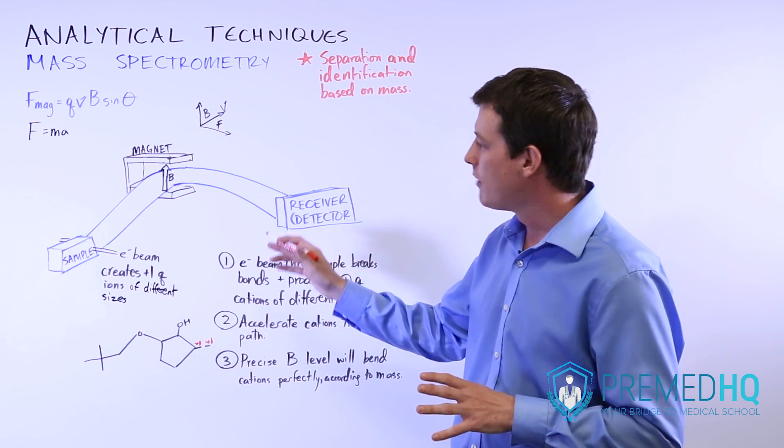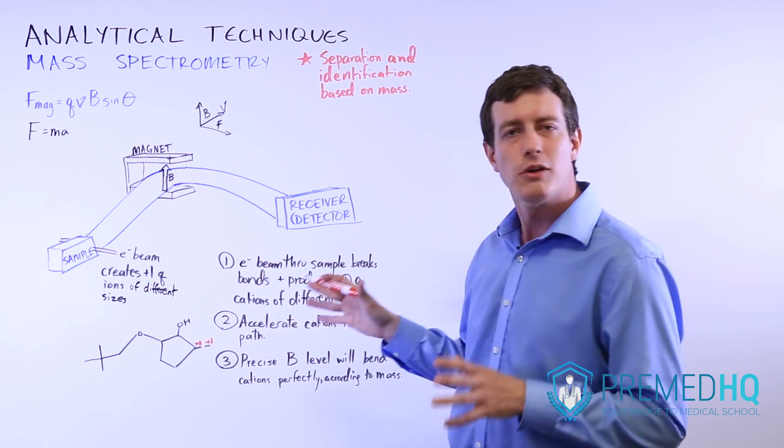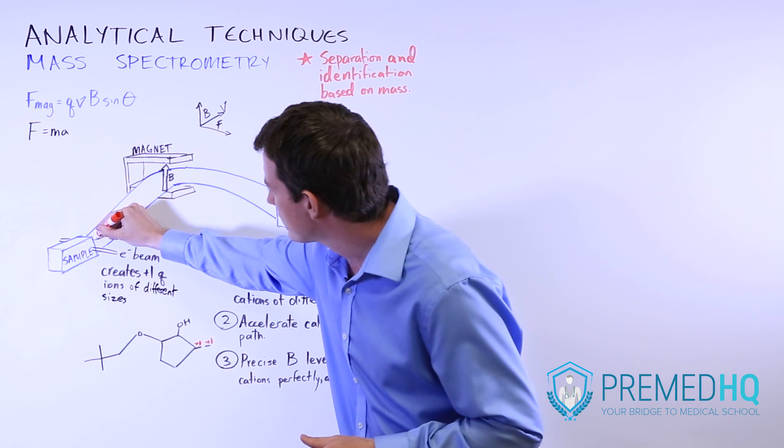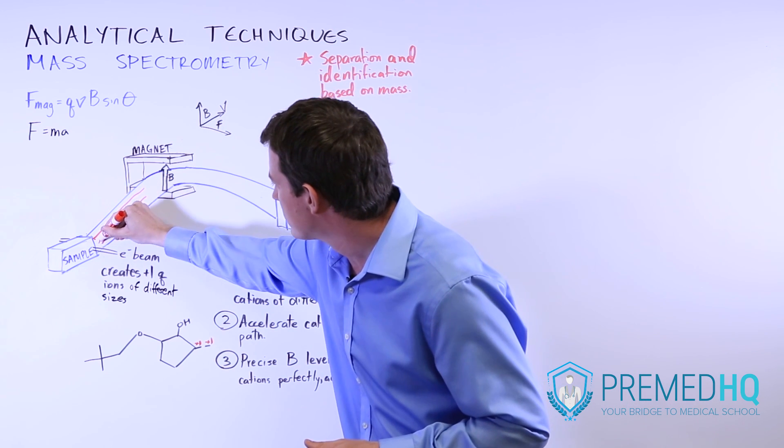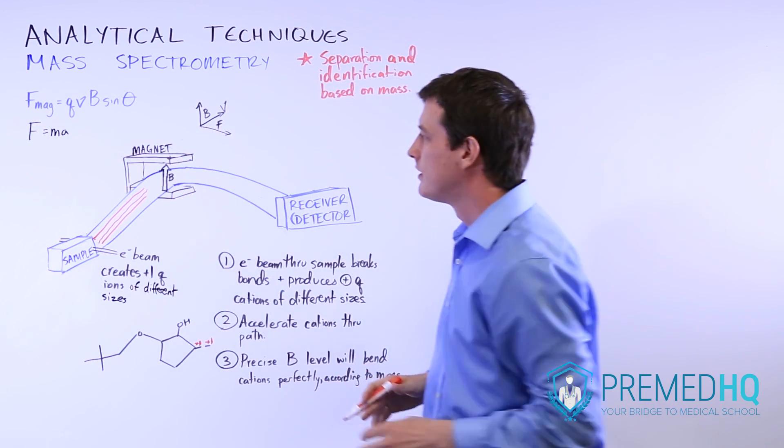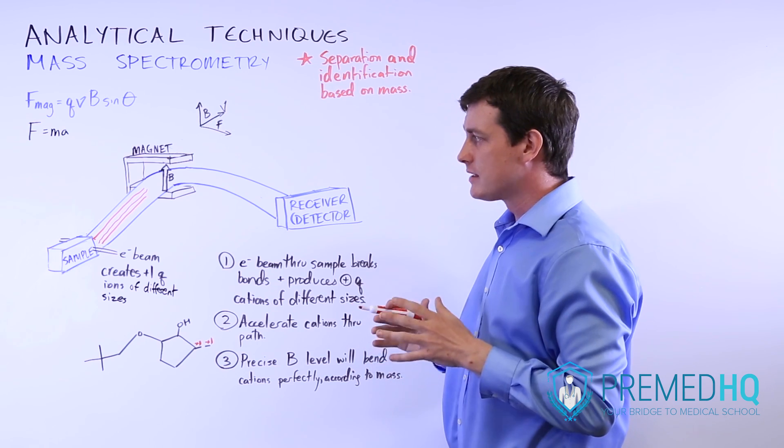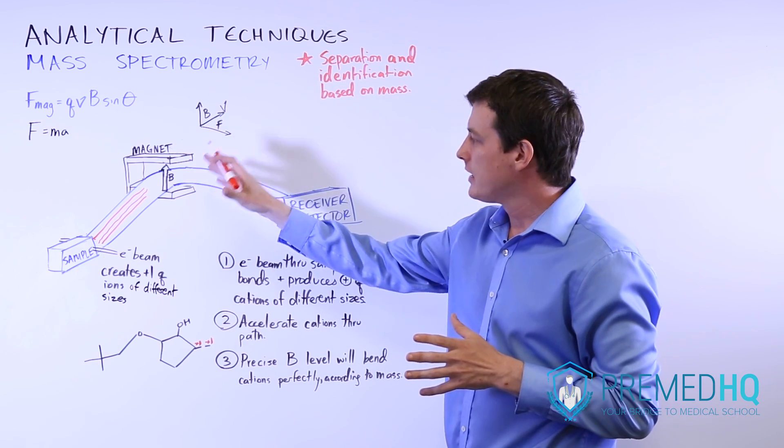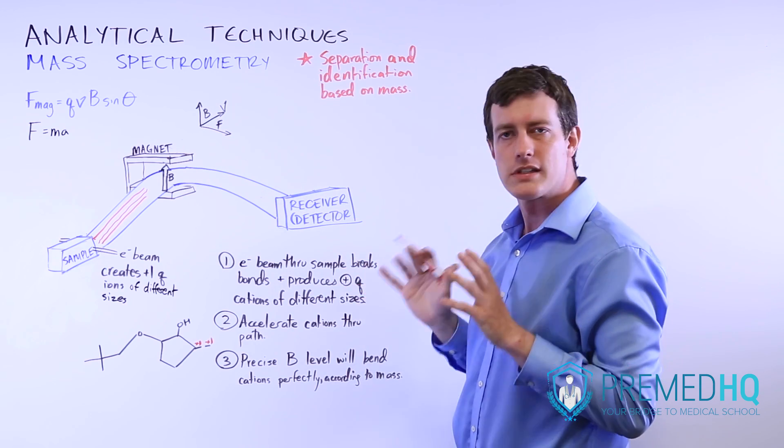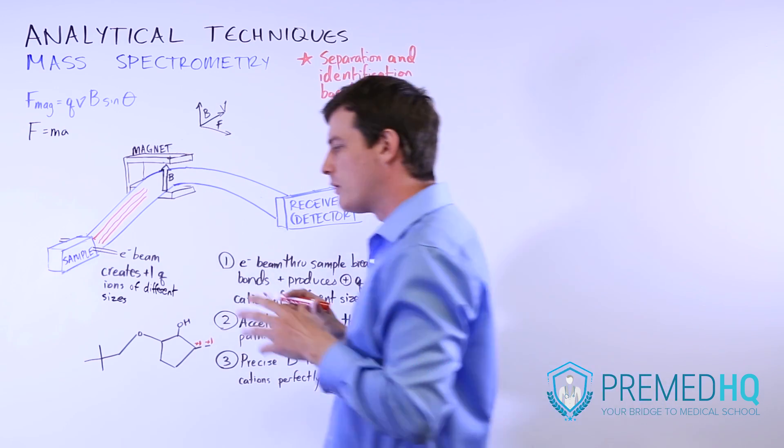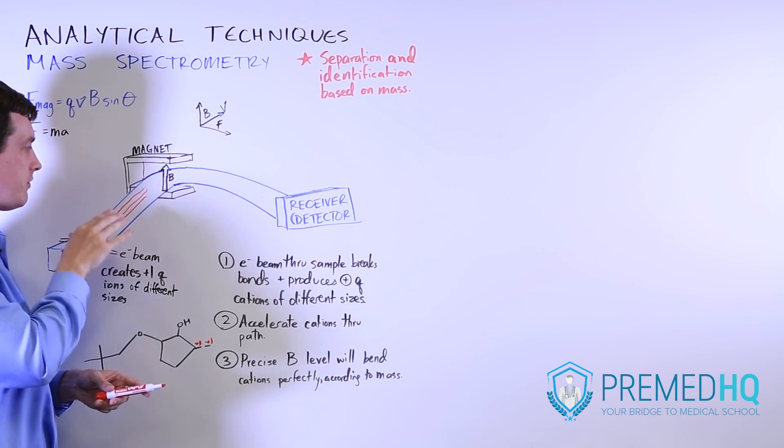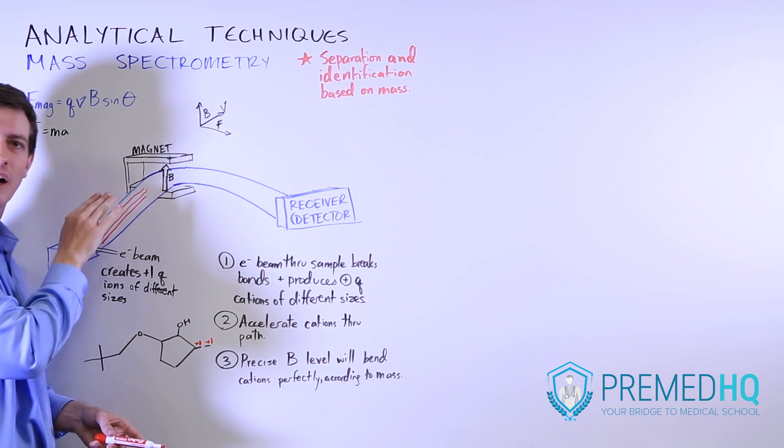Then what we'll do is we'll find some way to accelerate all of these cations down this path. They'll all be accelerated down a path like this, and they'll all be moving straight in one direction along this path. The next step is that they will encounter a magnetic field that is produced by an external magnet.